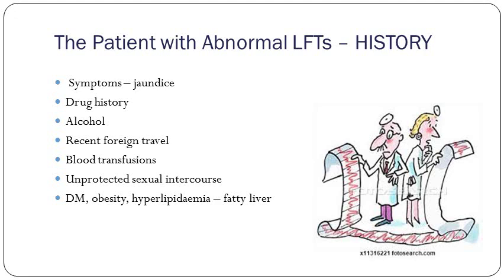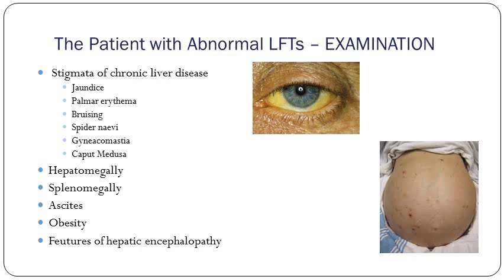For a patient with abnormal LFTs, things to ask in the history: get your symptoms, specifically ask about jaundice, get a full drug history, full alcohol history, any recent foreign travel, any blood transfusions, unprotected sexual intercourse, and ask about diabetes and hyperlipidemia — all these can cause fatty liver disease. On examination: stigmata of chronic liver disease — jaundice, palmar erythema, bruising, spider nevi. Do a full GI examination looking for hepatomegaly, arthritis, splenomegaly, and note any obesity. Ask for features of hepatic encephalopathy.